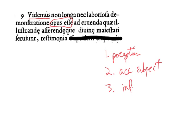Now this word OPUS, because it is the subject of ESSE, of the indirect statement, it is neuter, singular, and accusative. And this word, when it's in this idiom, OPUS ESSE, always patterns with an ablative. Thus we have DEMONSTRATIONE.